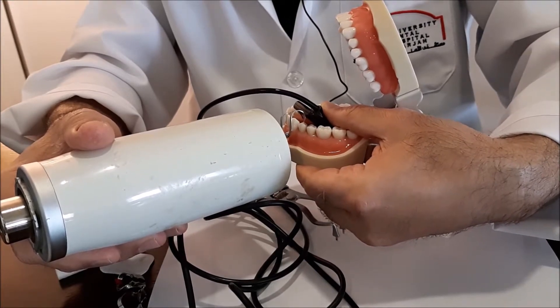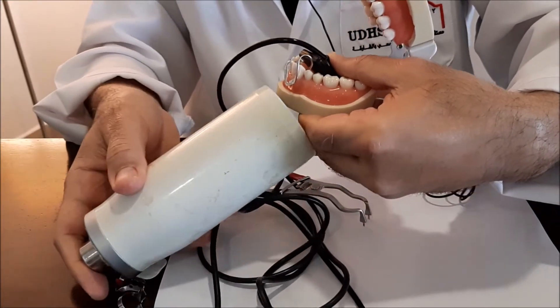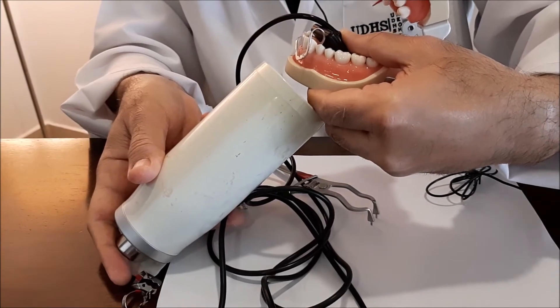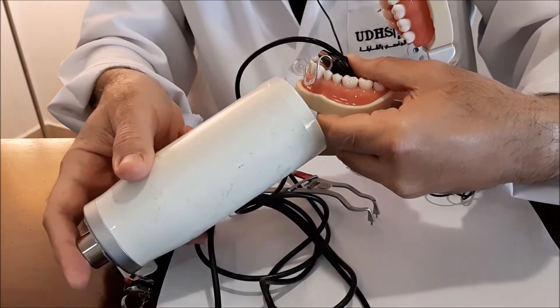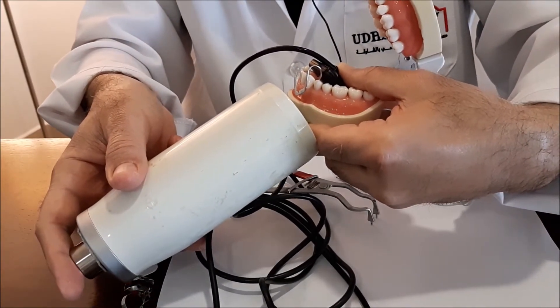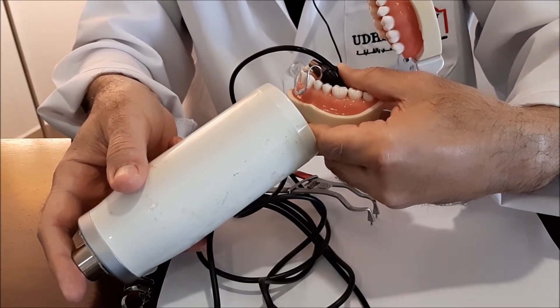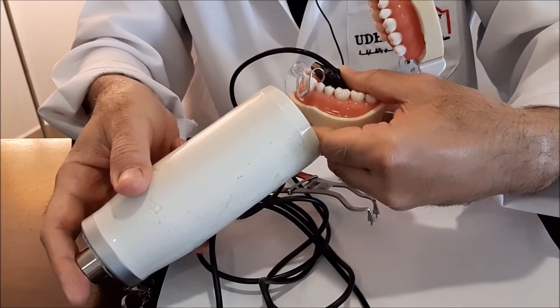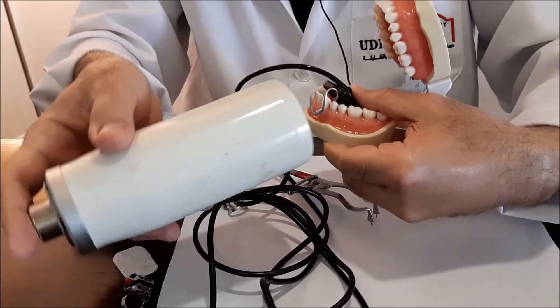You direct your beam perpendicular on the tooth. Then you direct it perpendicular on the sensor and then you direct it midway. So it will be on the angle bisector. This will minimize or hopefully give you the same image without any distortion.